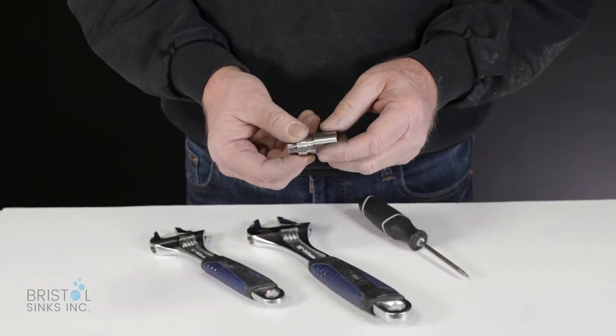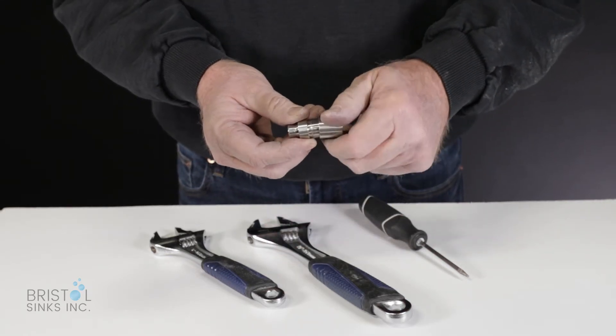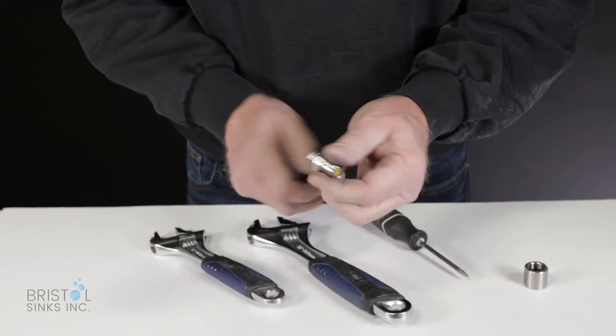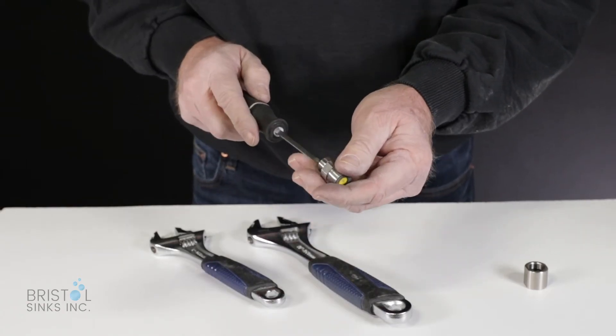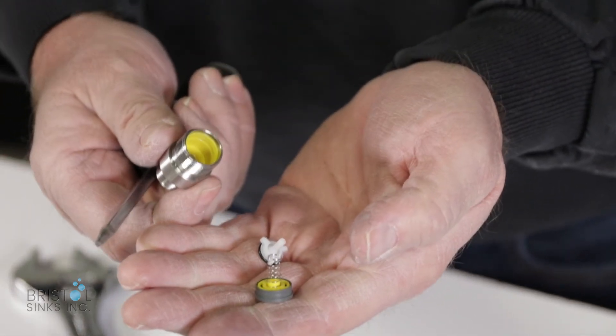To take apart the check valve, you'll need two wrenches and a screwdriver. Loosen these with the wrenches and it'll expose the small filter. What you do then is take a screwdriver and push this out to expose the filter inside.